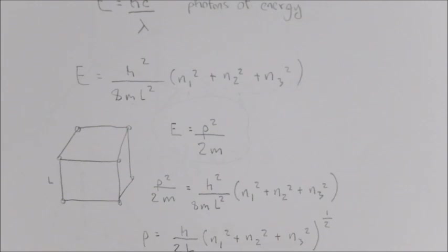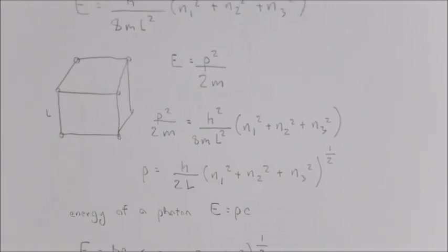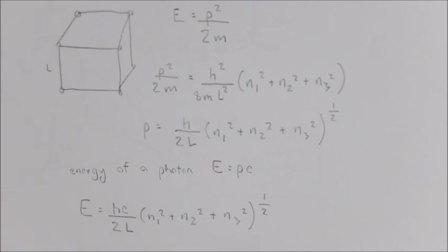We're going to rewrite that in terms of the energy of a photon using this formula right here. Substituted in, this allows us to end up with a law for the energy state as a function of these quantum numbers, the length L of the cube, and these factors for the energy state of our photon.